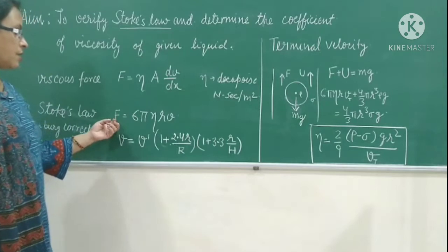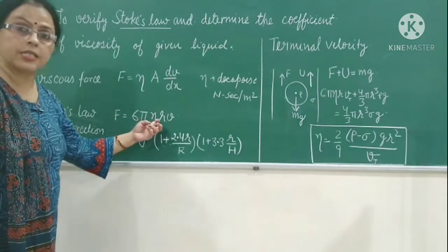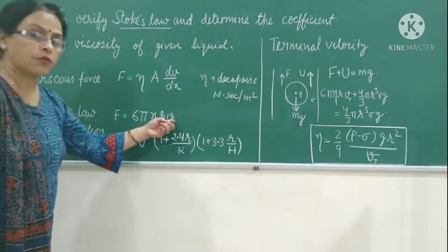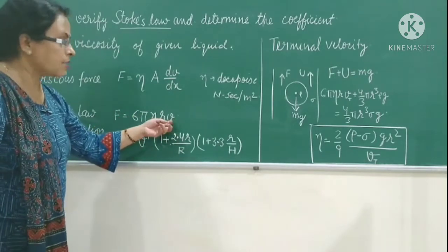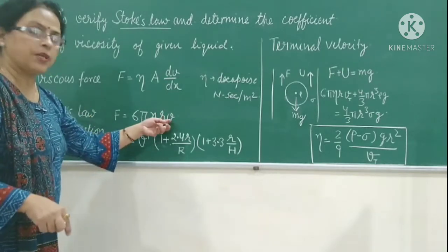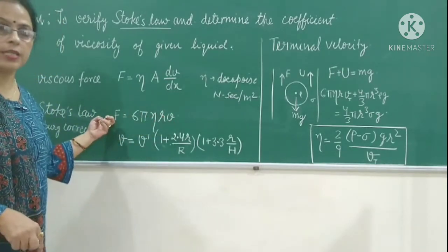There is a relative motion between the different layers of the liquid and so the dragging force comes into existence, which is equal to 6 pi eta R V. As this relation suggests that this force depends on velocity V and as the body is falling under gravity, its V will continue to increase. So it means the viscous force will also increase.